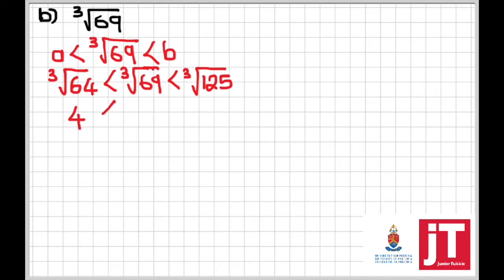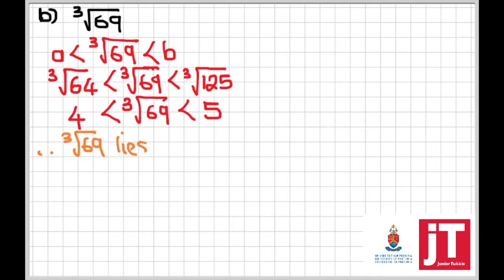Simplifying, we get 4 < ∛69 < 5. Therefore, the cube root of 69 lies between 4 and 5 as our consecutive integers. We move on to the next question.